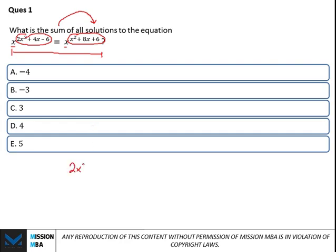Let's solve. 2x squared plus 4x minus 6 equals to x squared plus 8x plus 6. That ends up in x squared minus 4x minus 12 equals to 0. And that's nothing but x minus 6 and x plus 2.